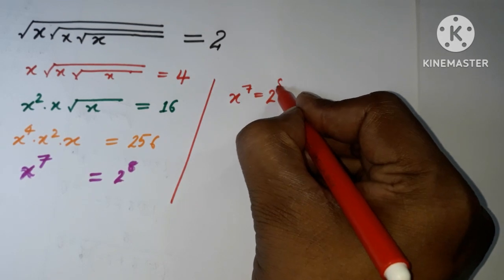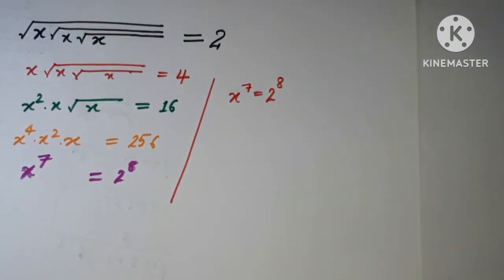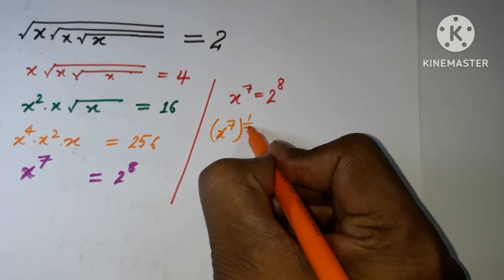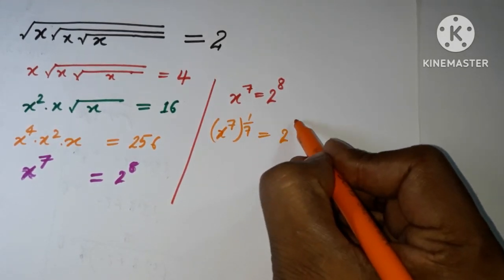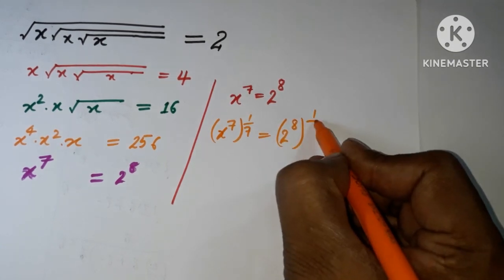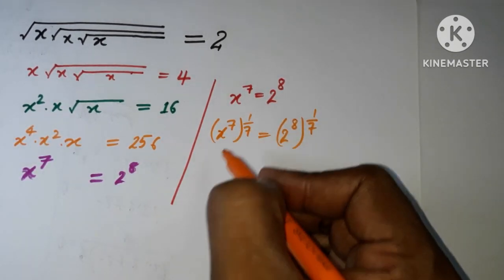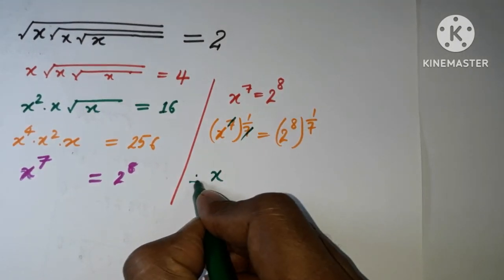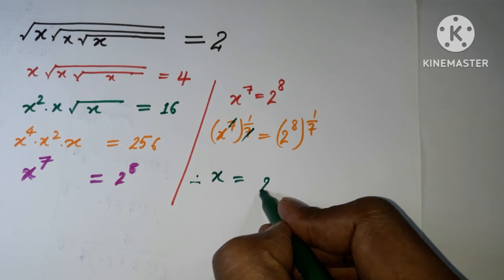I need to get x, so I'm raising both sides by 1 upon 7. Here 2 to the power 8, and that is also raising 1 upon 7. So both will cancel each other, and we have finally x equal to 2 to the power 8 by 7.